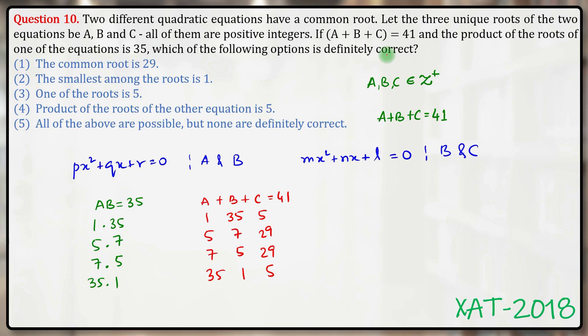Which of the following options is definitely correct? The common root is 29. Well, in fact, in no case is the common root 29. So this is not definitely correct, this is definitely false.